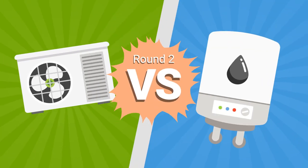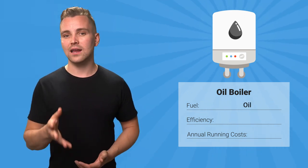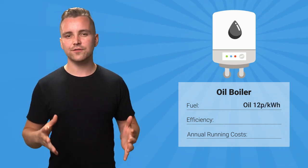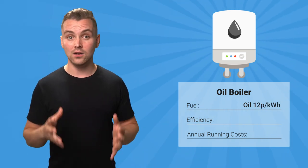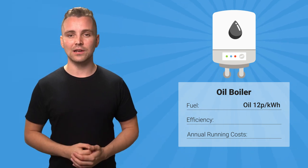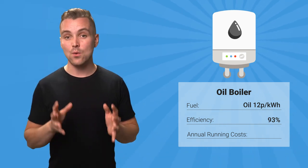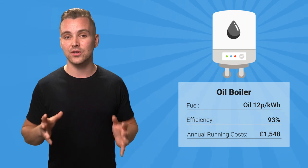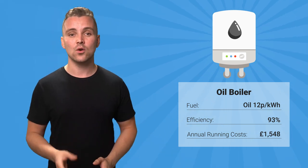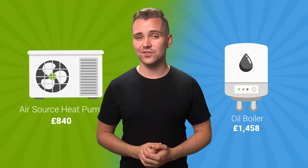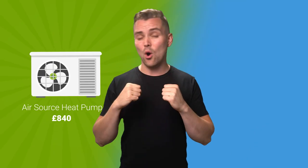But what about their fossil fuel alternatives? In the not-so-green corner, we have oil boilers — generally only chosen if there is no connection to the gas grid available. The cost of oil per kilowatt hour is approximately 12p, and some oil boilers manage 93% efficiency. Due to their relatively high efficiency, you can expect to pay £1,548 per year with an oil boiler. Air source heat pumps have landed a knockout blow on oil boilers when it comes to running costs.